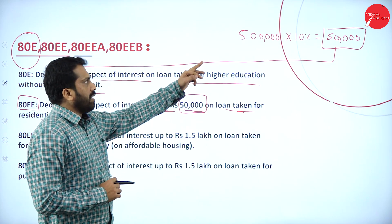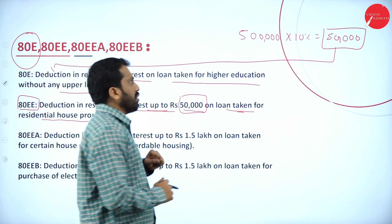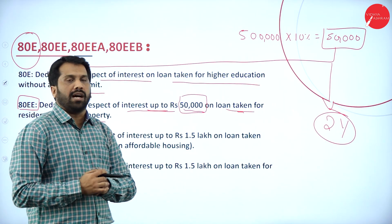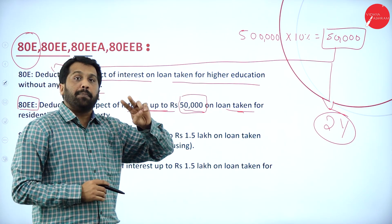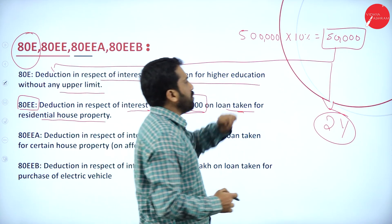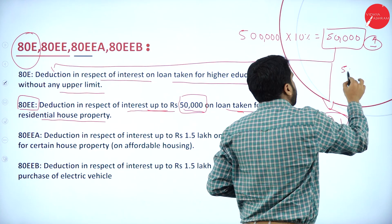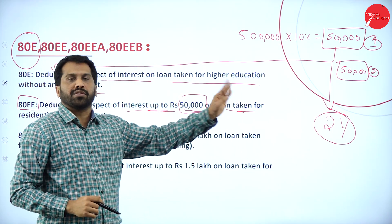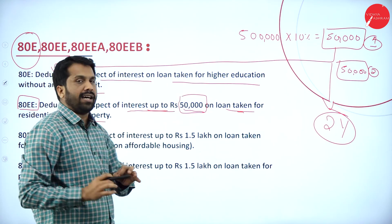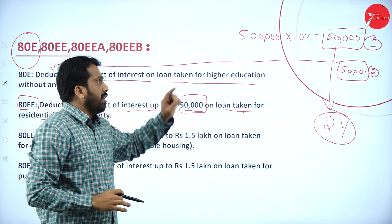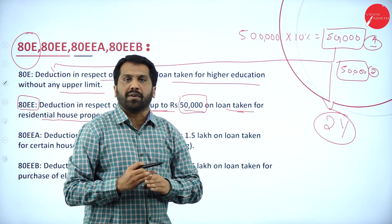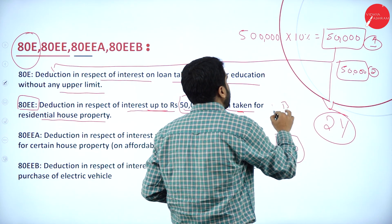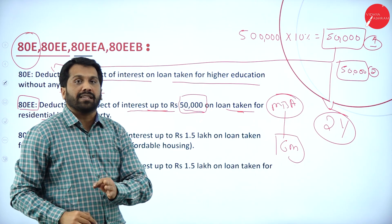Coming back to 80E — assume you have taken a loan of five lakh and your MBA is for two years. For those two years, on five lakh you are supposed to pay fifty thousand in the first year and fifty thousand in the second year as interest. After you are done with the two-year MBA, the bank will give you six months from the date of completion of MBA before you need to start repaying the principal.